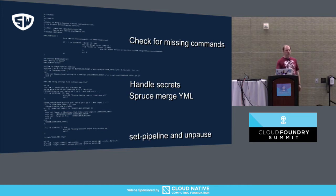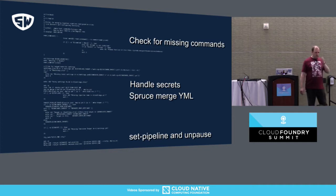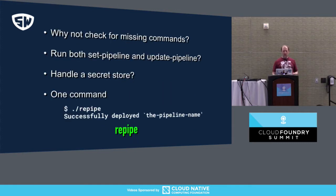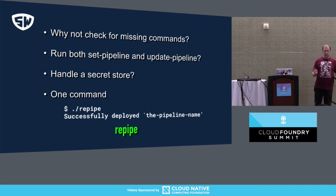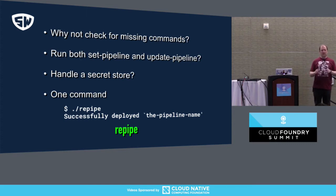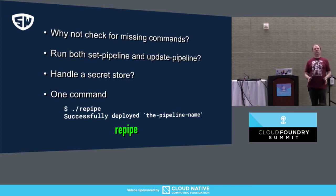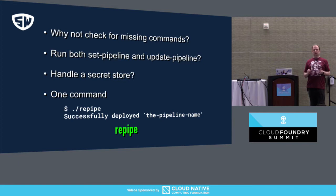And then finally we want to do the set pipeline and unpause and get going. So now if you do that, you have just one command. You're pairing with your partner, you're making your changes, you get to the end, and all you do is type 'repipe'. It figures out everything for you. When I started doing this, productivity went up because you're not fat fingering anything — you can focus on editing your pipelines, focus on the code, and all this stuff gets automated away.